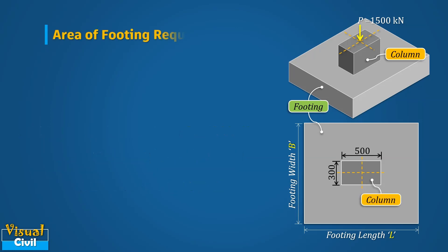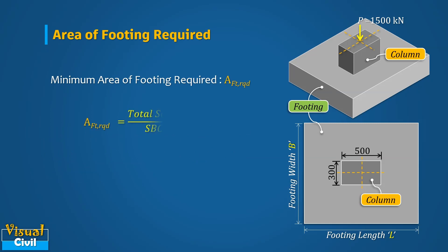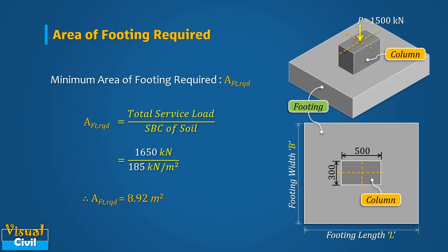The minimum area of footing required is equal to the total service load divided by the safe bearing capacity of soil. After putting in the values and solving, we get it equal to 8.92 meter square.